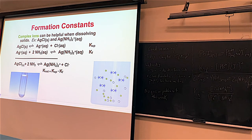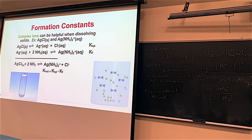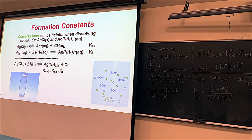The more ammonia you add, the more silver ion it removes, and more silver chloride dissolves. Scientists can now use complex ions to make soluble things insoluble and vice versa. If you have both the KSP and the KF, you can literally multiply these K values together to get the overall K, which also tells you if the reaction is reactant-favored or product-favored.